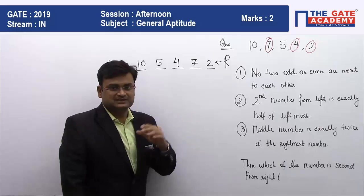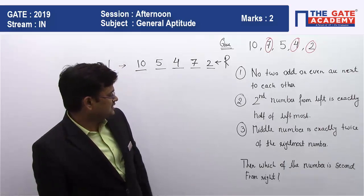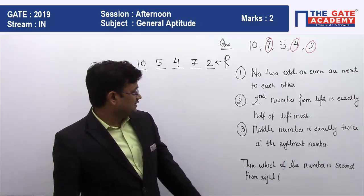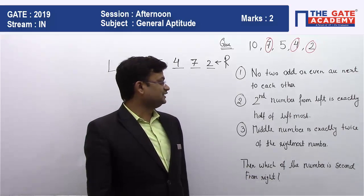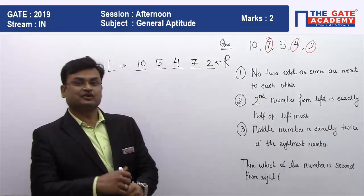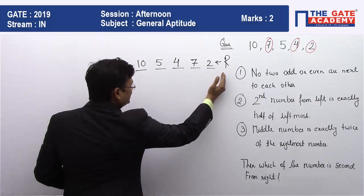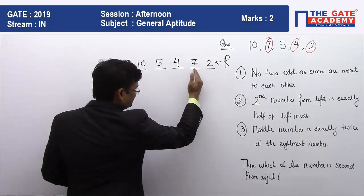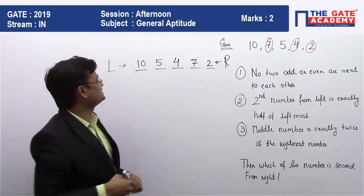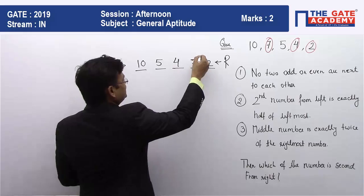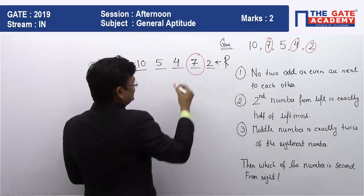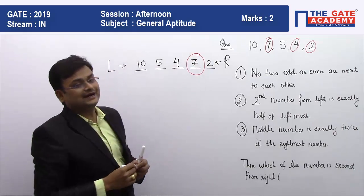The question is: which number is second from the right? From the right, the first number is 2 and the second number is 7. So our answer is 7.